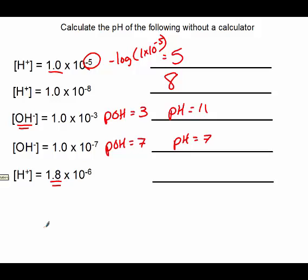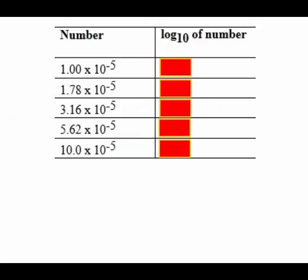This last one isn't 1.0 times 10 to the whatever, it's 1.8, which means my pH will not be 6, it'll be around 6, but it won't be 6. So, to solve problems where it's not 1 times 10 to the whatever, we need to know this number scale.